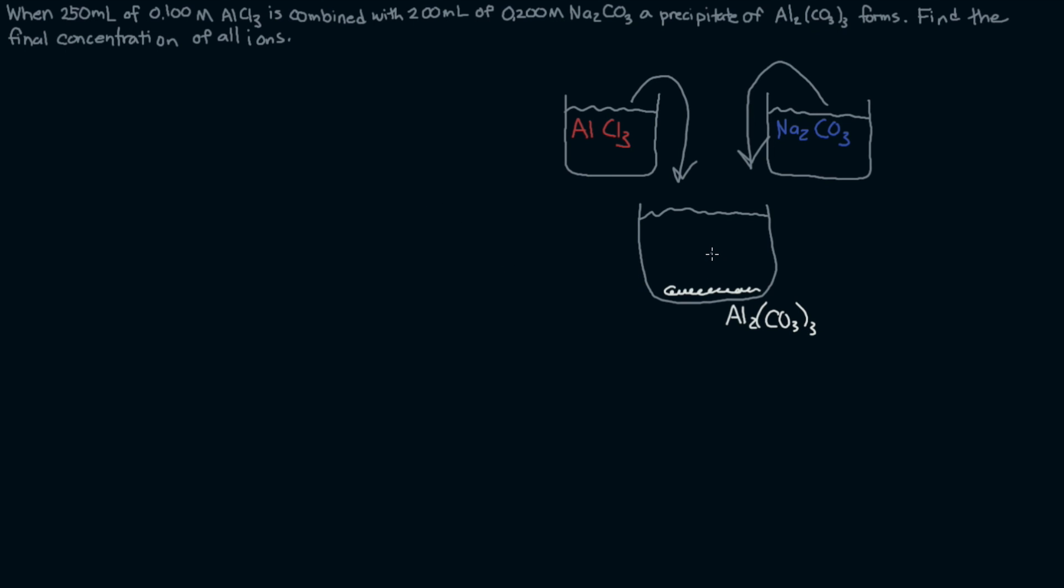But that's not the only thing in here. You can see from the formula for the precipitate that it doesn't include chlorine and it doesn't include sodium. So that must still be floating around in this solution, and there's quite possibly an excess reagent in the creation of the aluminum carbonate.